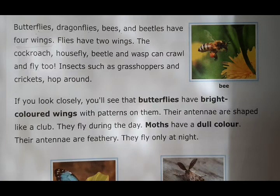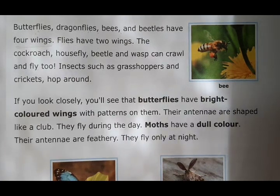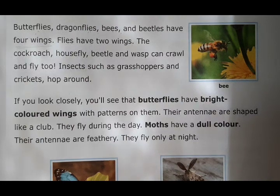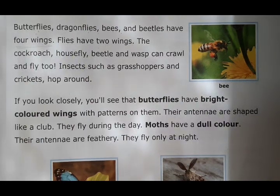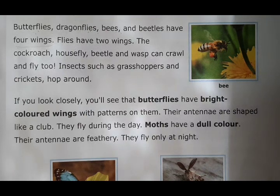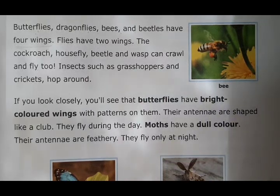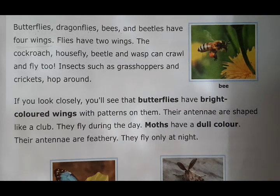In the first part of this chapter, we learned about the world of insects and their body is divided into three parts: head, thorax, and abdomen. In today's video, we are going to learn about the wings of insects, their feeding habits, and how they lay eggs. If you want to see the first part of this chapter, you can see the link in the description box. So let us start the text.